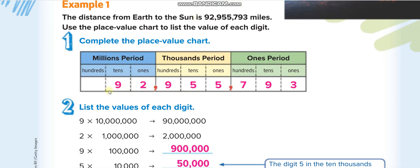Now, how do we read a number like this? The 92 is in the millions period. You read every period separately. For example, if you have 192 in the millions period, you read '192 millions,' then the next period, then the last period. You read the name of the period — 'millions' — after reading that group.